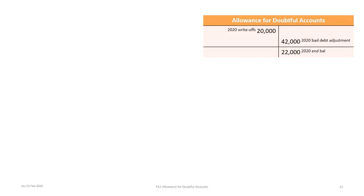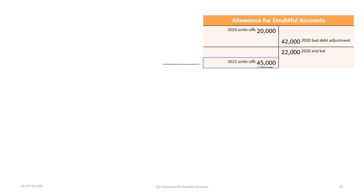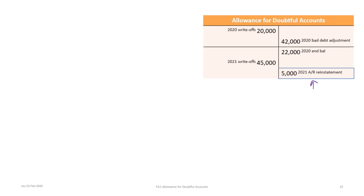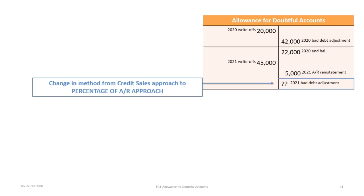Now we reconstruct the allowance for doubtful accounts activity. Starting with the $22,000 ending balance from 2020, we debit $45,000 for write-offs and credit $5,000 for the reinstatement. Under the AR approach, unlike the credit sales approach, we do not directly calculate the bad debt adjustment from sales — instead we calculate the desired ending AFDA balance. The bad debt adjustment amount is a question mark that we'll solve for.